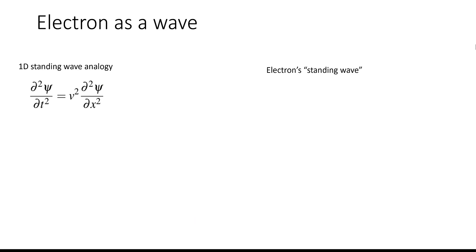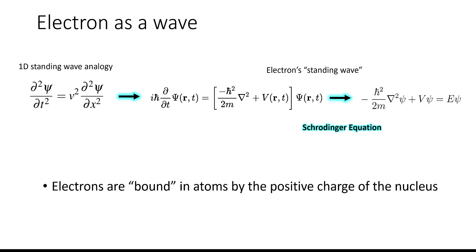Now let's apply the wave analogy to electrons and atoms. If we take the wave equation and adjust it for the potential and kinetic energy of the electron around a nucleus, then we get what is called the Schrodinger equation. This equation accounts for the electrons being bound inside the atoms by the charge of the nucleus. And if we solve the Schrodinger equation, we get these sort of three-dimensional standing waves of the electrons around the nucleus.